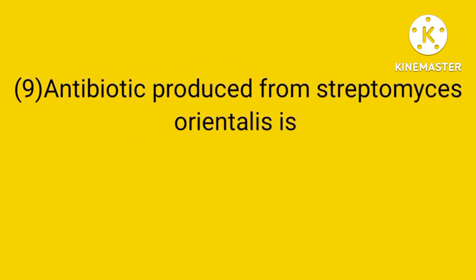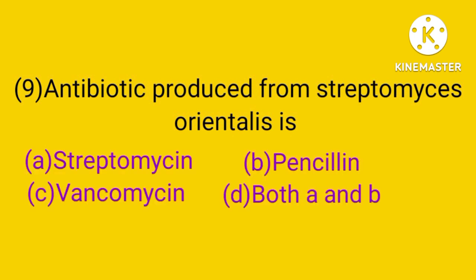Question number 9. Antibiotic produced from Streptomyces orientalis is: Streptomycin, Penicillin, Vancomycin, or both A and B. The answer is C. Vancomycin, and it is used for prevention and treatment of infections caused by gram-positive bacteria, especially Streptococci.